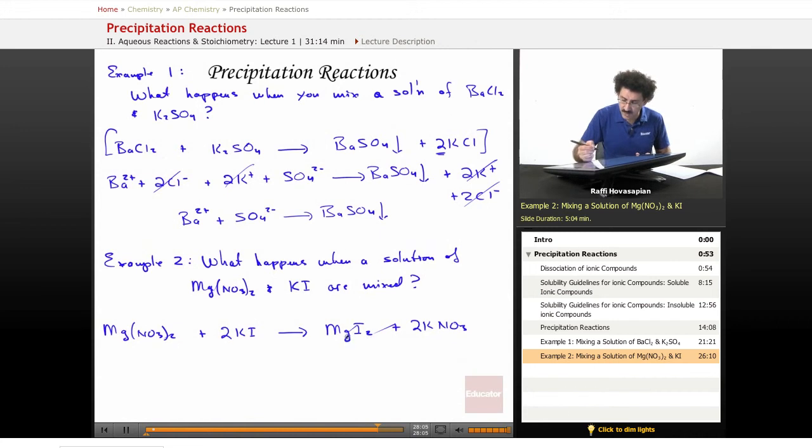Now let's check for solubility, because that's what we do next. Magnesium nitrate is fully soluble. Therefore, we have Mg²⁺ plus 2NO3⁻.